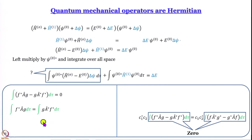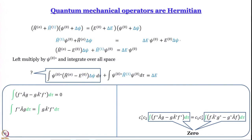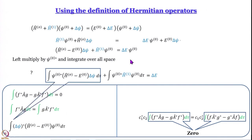Cleaning up: integral f* A-hat g − g·(A-hat f)* d-tau = 0. Expanding the left-hand side gives two terms; moving the minus term to the right gives: integral f* A-hat g d-tau = integral g·(A-hat f)* d-tau. This is a useful result: within the integral sign, you can interchange the two functions — the operator can be moved from acting on one function to acting on the other.